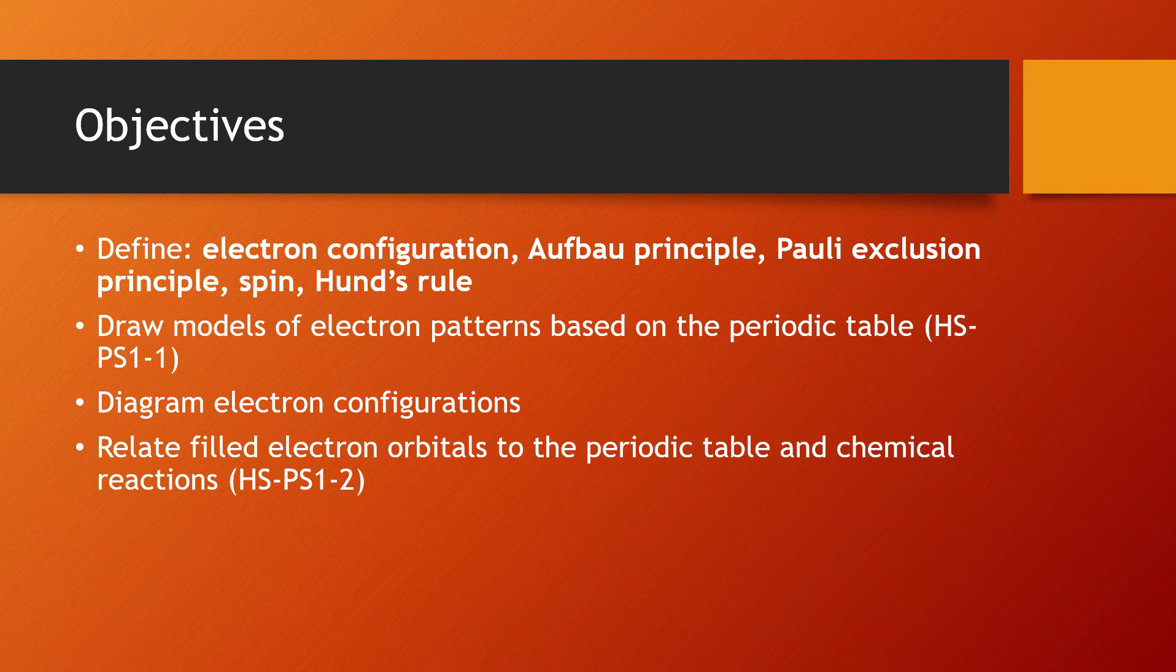Draw models of electron patterns based on the periodic table. You will need to do that for your exam and you'll need to do that in class. Diagram electron configurations. That's pretty much the same thing that other objective says, and really fill the electron orbitals to the periodic table and chemical reactions. So you want to go back to lecture 5.1 to be looking at how those orbitals work.